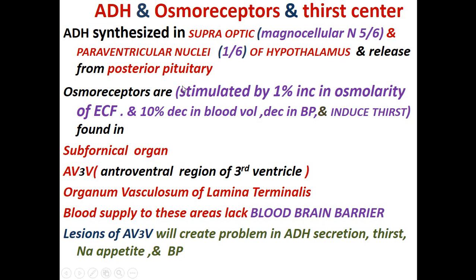Osmoreceptors are those receptors which are stimulated by a one-percent increase in the osmolarity of the extracellular fluid, or a ten-percent decrease in blood volume, or a decrease in blood pressure, and they induce thirst. If you take more salt in your diet, your osmolarity is going to increase. If your osmolarity increases by just one percent, you have to take water to neutralize the excess sodium in your body.